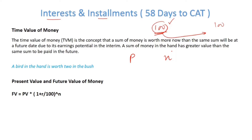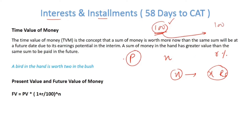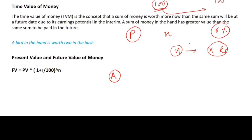Let's say you borrowed P amount for n years, and the market-prevalent rate is r percent. What you have to do is return n equal installments of x rupees. The math here is simple: you have taken P and invested it at market rate r percent. Similarly, the person receiving these installments also invests those installments in the market at r percent. Both these returns should be equal in an equilibrium scenario.